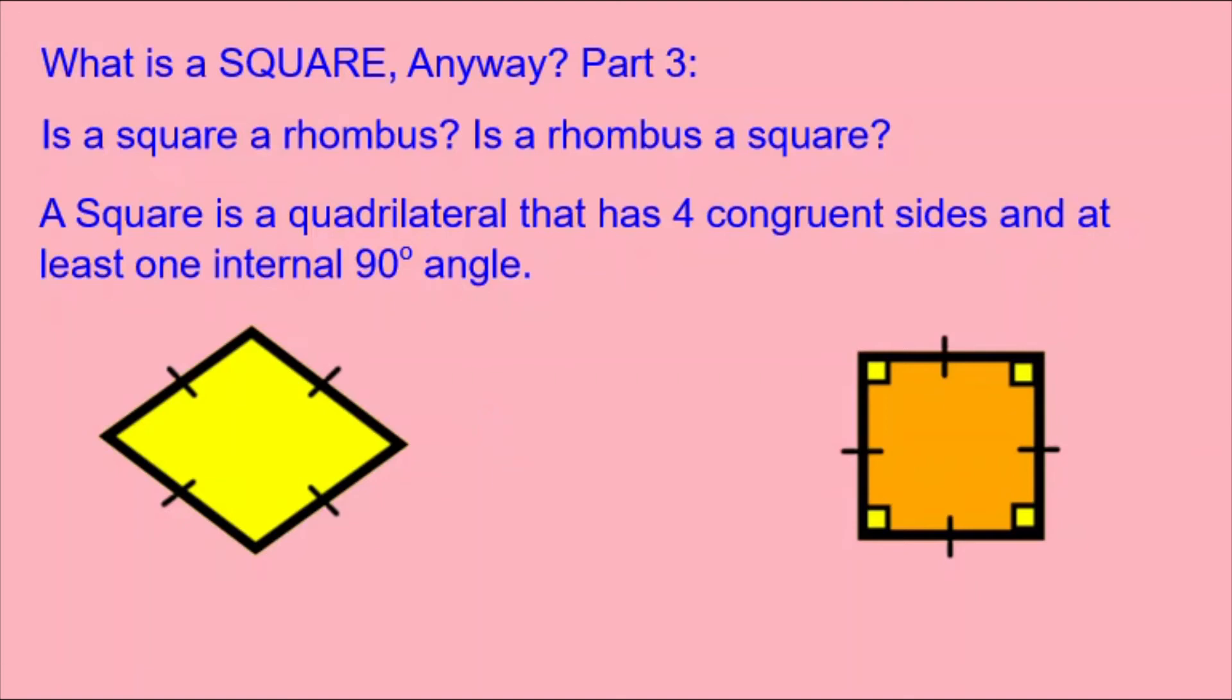So what's the definition of a rhombus? A rhombus is a quadrilateral that has four congruent sides. Well, our yellow rhombus is following that rule, and so is our orange square.